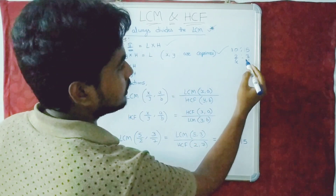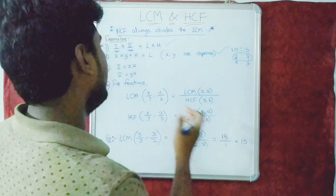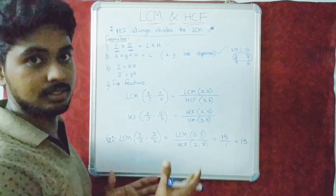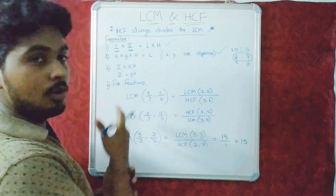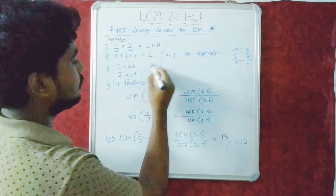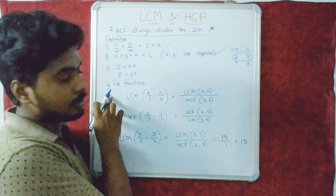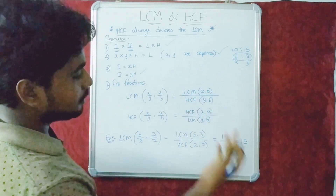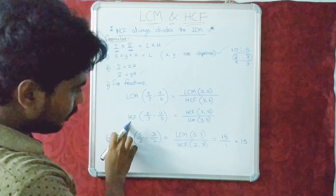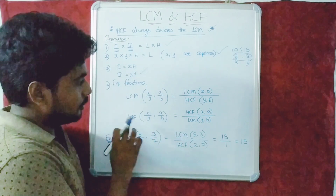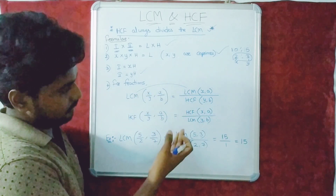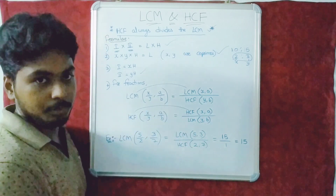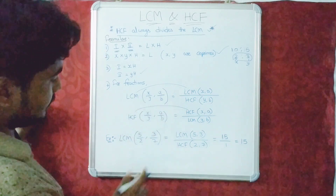If we have the ratio and HCF directly, we can find the two numbers. The question might be: if the ratio of two numbers is such-and-such and the HCF is such-and-such, what are the two numbers? We use this formula to find them. For fractions, LCM of (x/a, y/b) = LCM of numerators divided by HCF of denominators. For HCF of fractions: HCF of numerators divided by LCM of denominators.